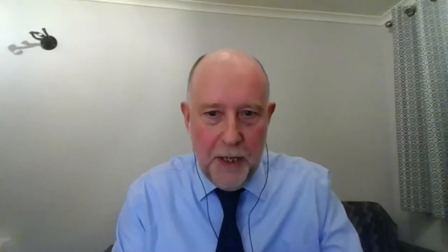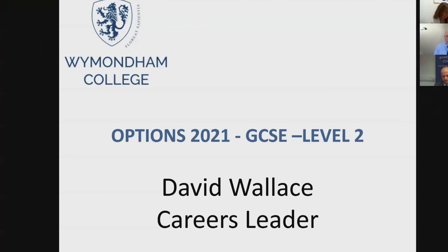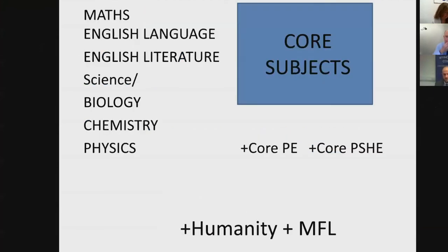What we're doing this evening is making some decisions around GCSEs — the level two qualifications your son or daughter will study. There is a core set of subjects studied across the whole of England, including the subjects on the left, plus core PE, PSHE and RE. To that, very sensibly, the college adds for the vast majority of students a humanity and a modern foreign language, and I'll come back to why that is such a great idea in terms of the options available to students later on.